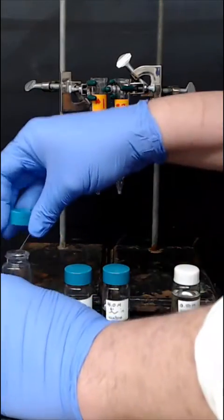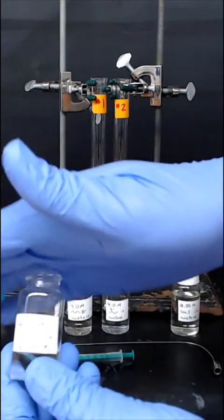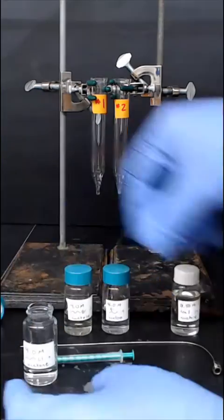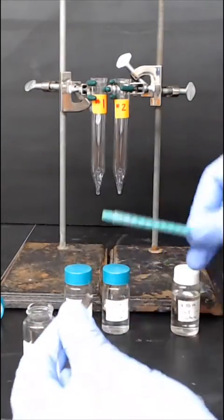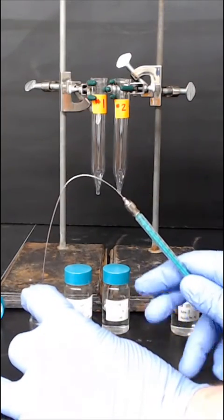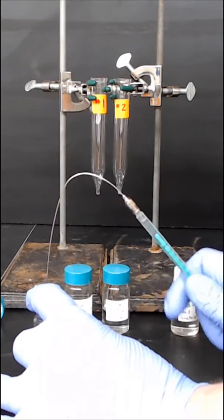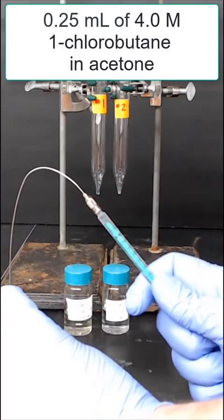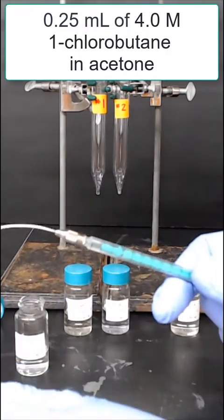The first reagent that we'll use is a solution of four-molar, one-chlorobutane in acetone. Here we're using a syringe and needle with a big J-hook. These are useful because it'll allow us to turn the syringe upside down and push out the air bubble that comes in the syringe barrel. We're dispensing 0.25 milliliters of our four-molar, one-chlorobutane in acetone solution.